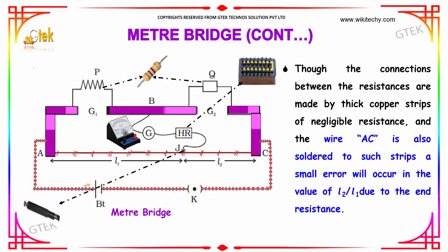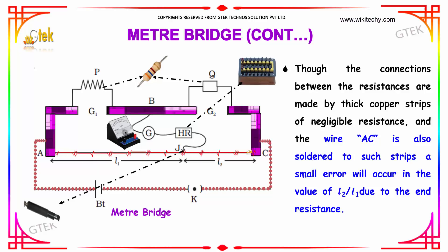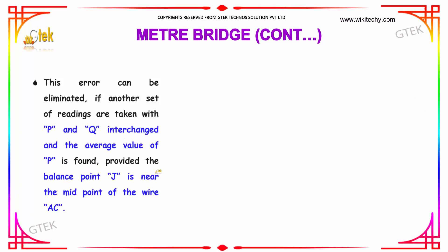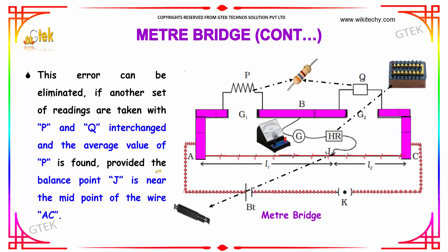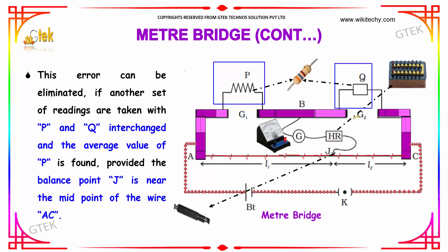Though the connections between the resistances are made up of thick copper stripes of negligible resistance and the wire AC is also soldered to such stripes, a small error will occur in the value of L2 divided by L1 due to end resistance. This error can be eliminated if another set of readings are taken with P and Q interchanged, and the average value of P is found, provided the balance point J is near the midpoint of the wire AC.